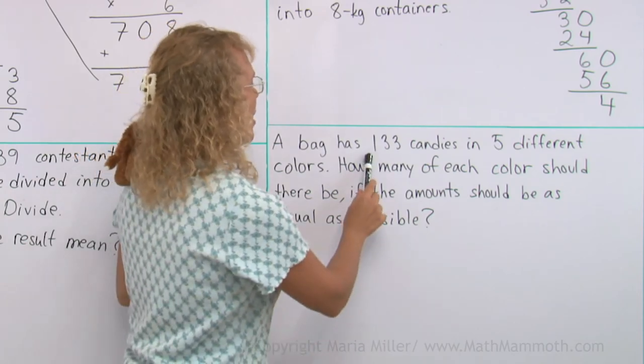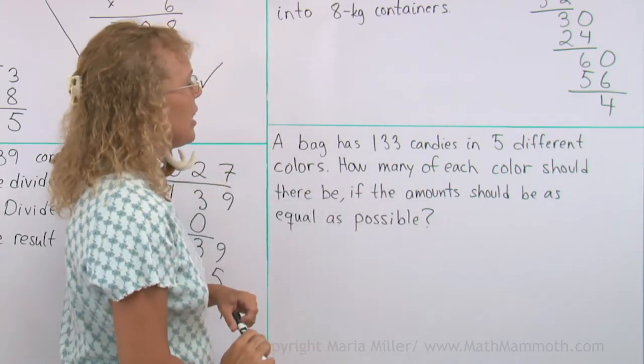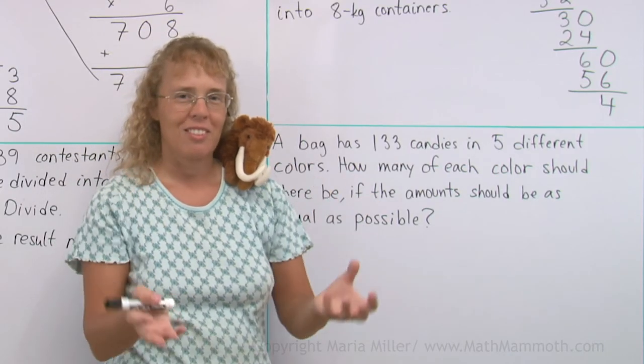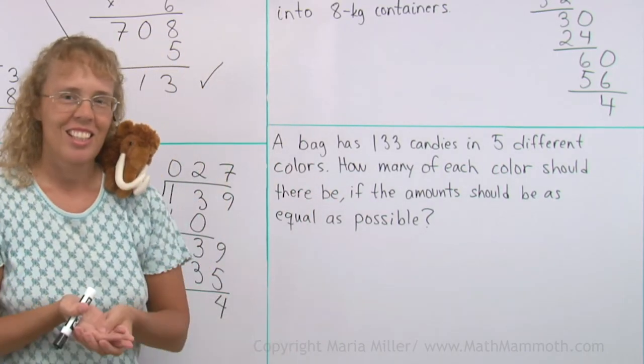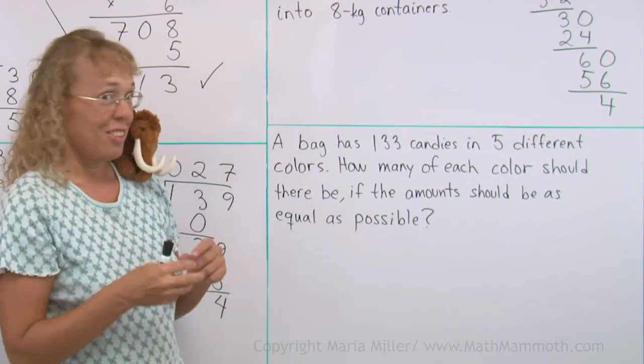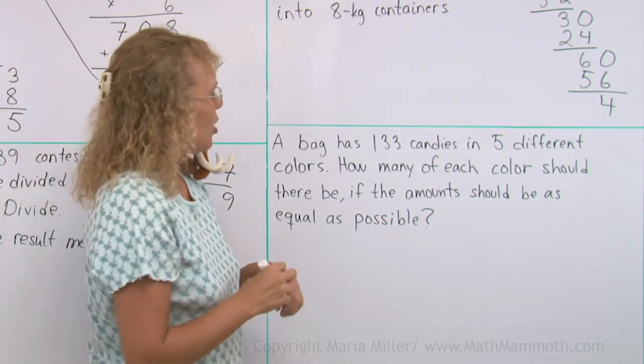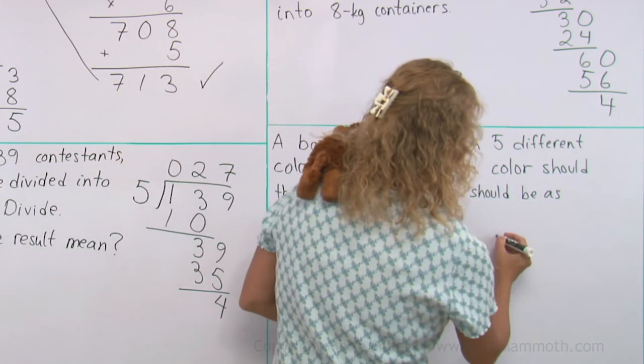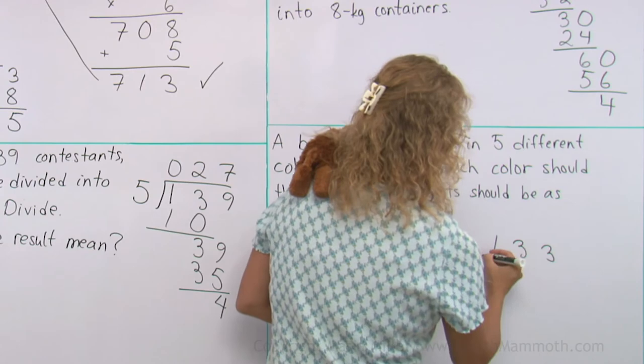A bag has 133 candies in five different colors. How many of each color should there be, if the amount should be as equal as possible? If you have a big bag of candies and there's five different colors, and you would want about the same amount of each color. So, again, we're going to divide.